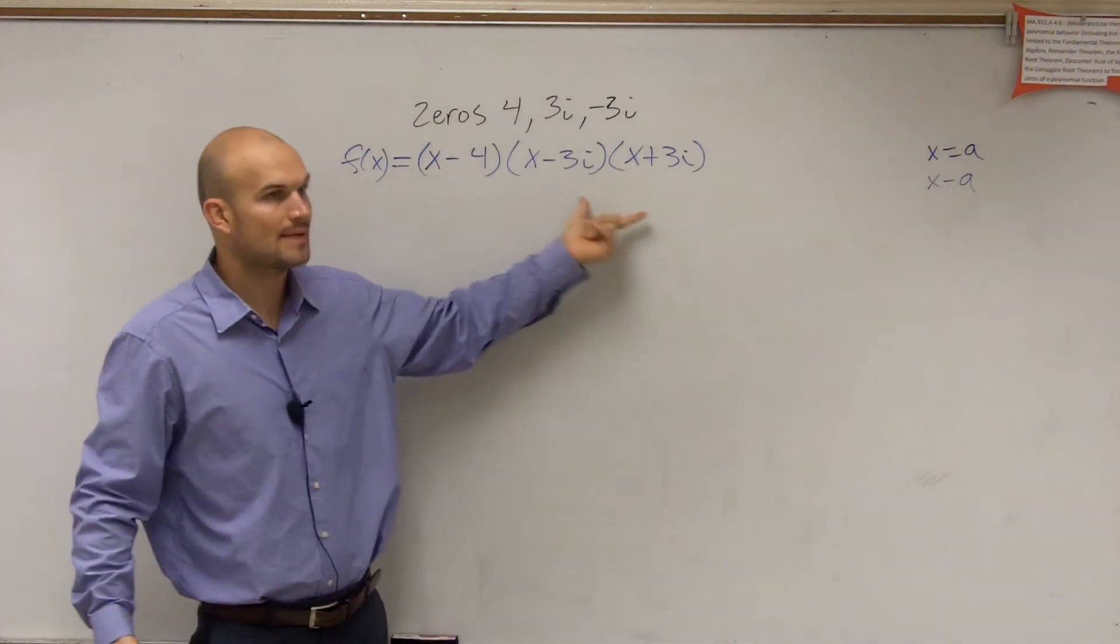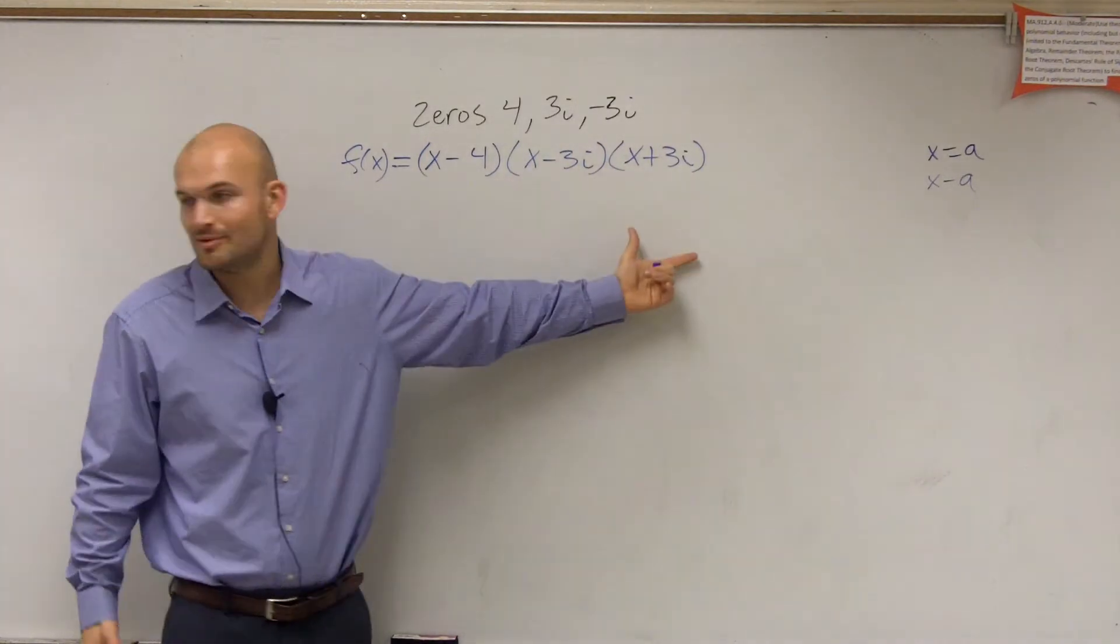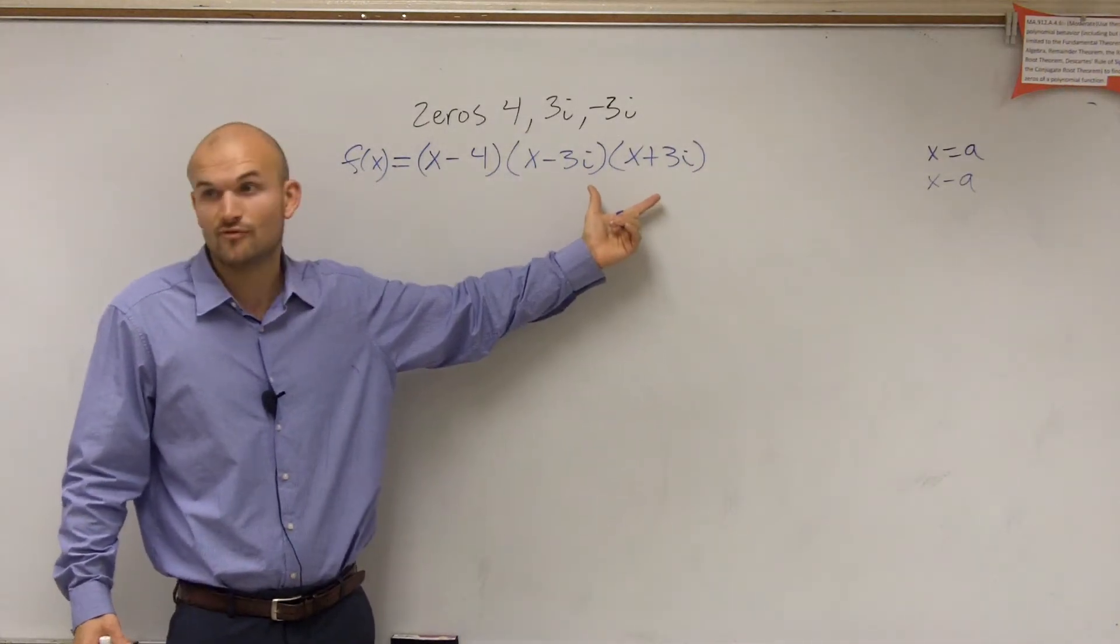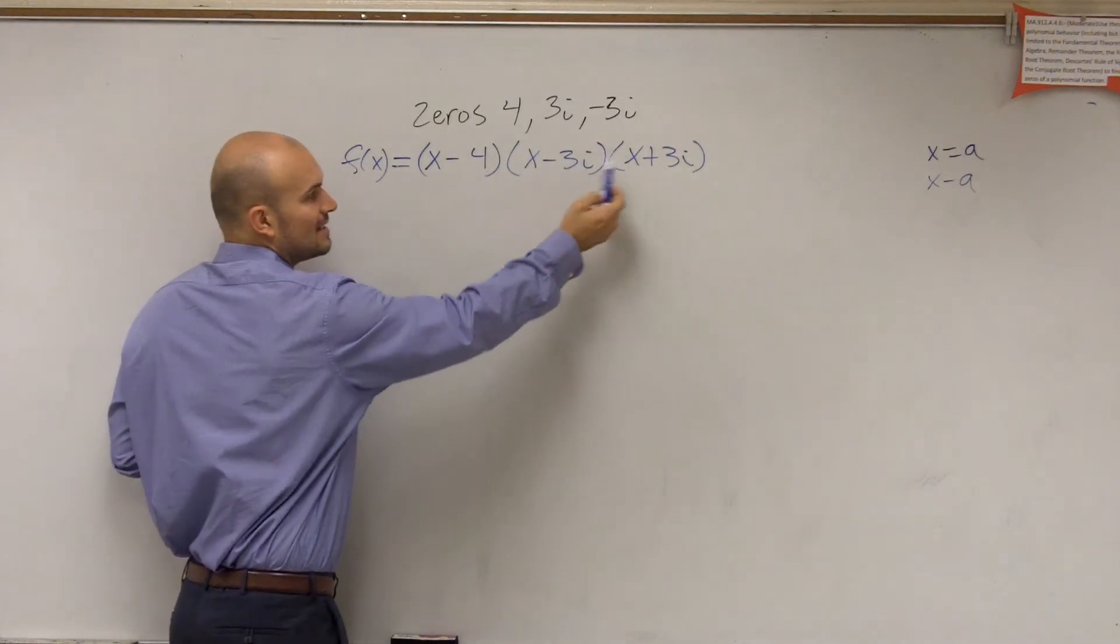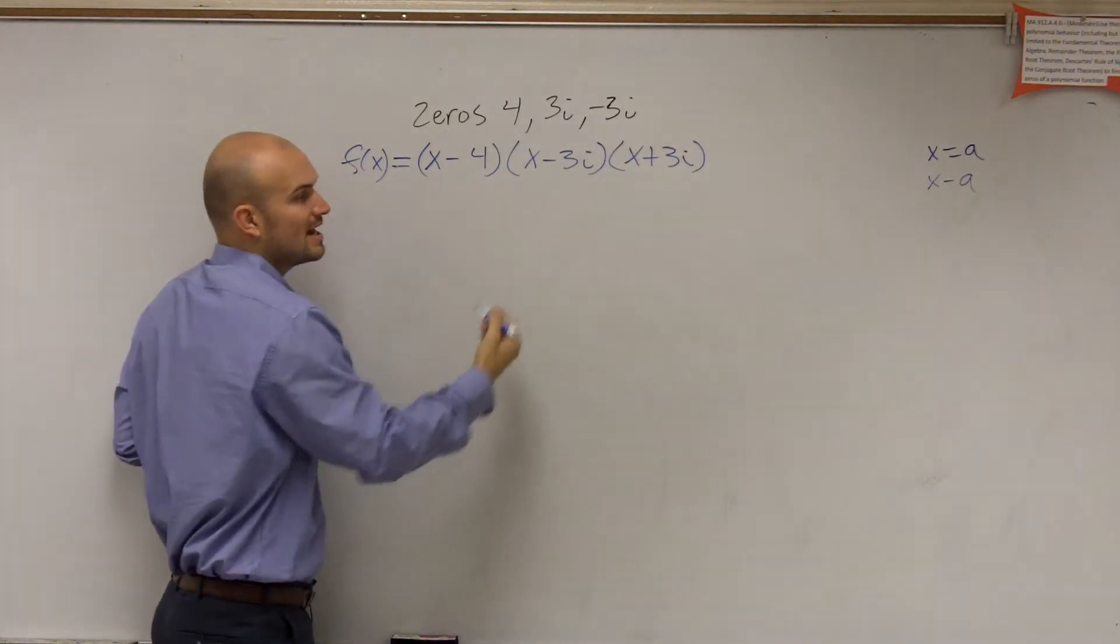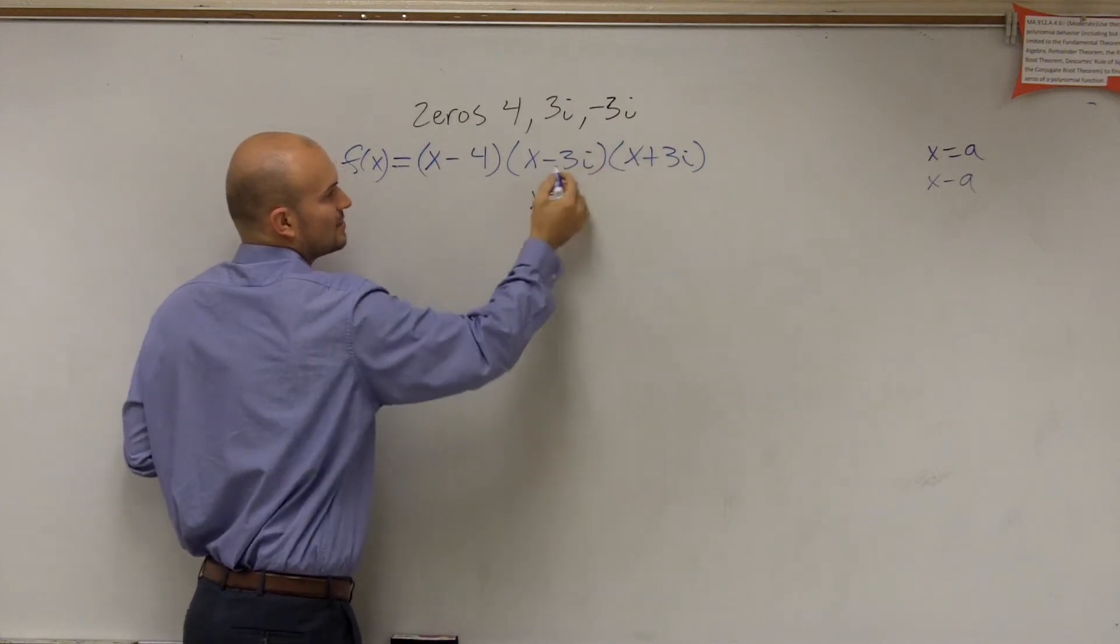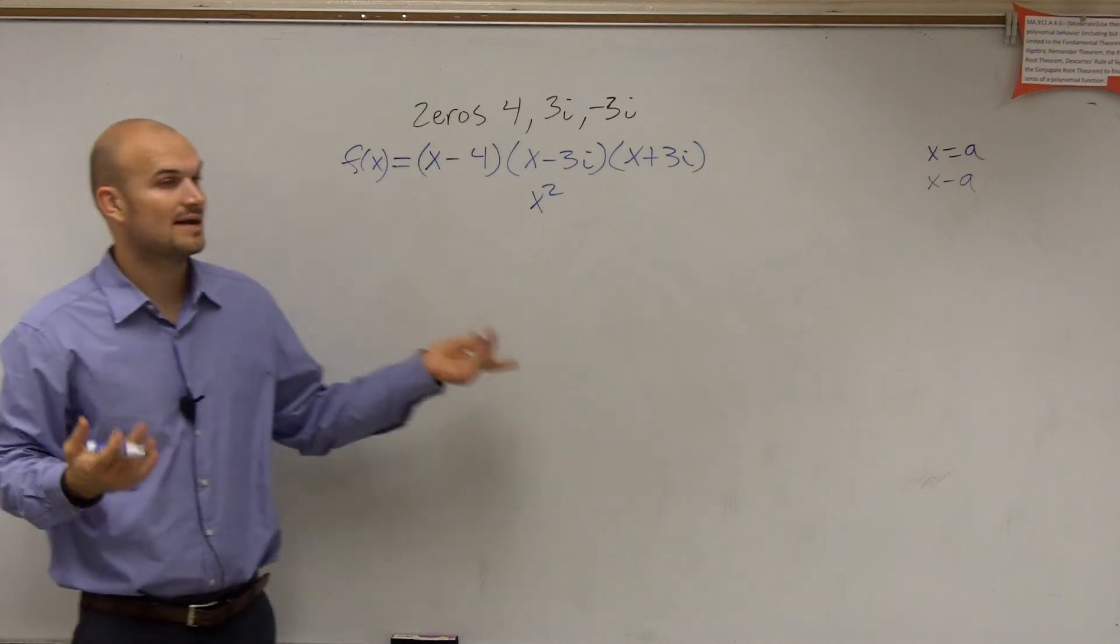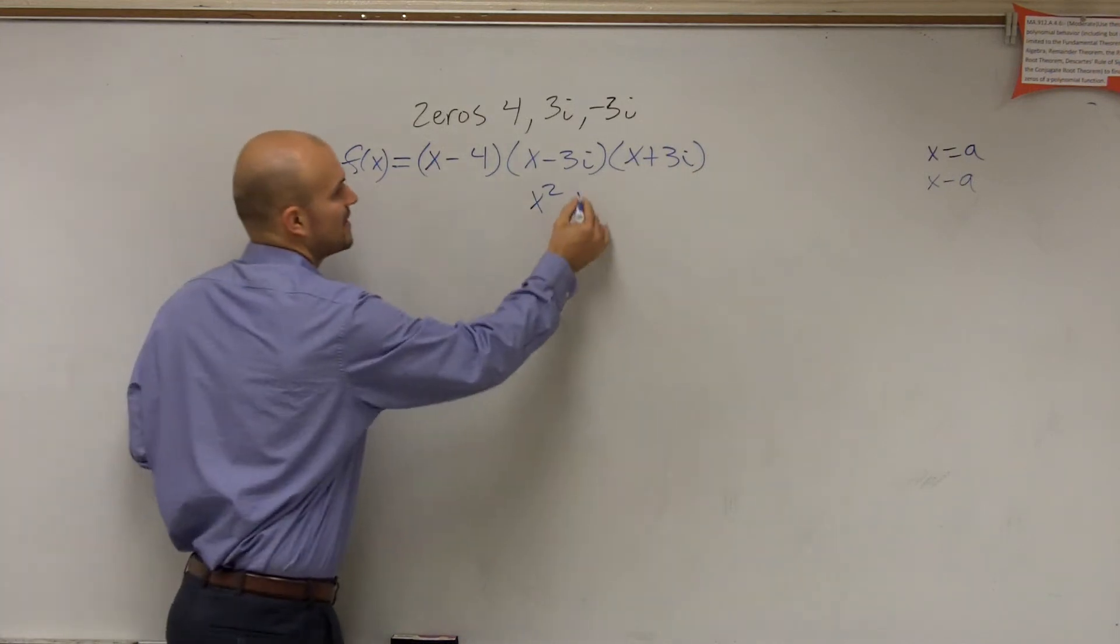What I'm going to do is I'm going to multiply these first. Why do I want to multiply these first? Because I always want to multiply difference of two squares first whenever I can because it's very simple. First two terms are the same, last two terms are the same, alternating a sign. All I need to do is just multiply x squared and the last two terms, which would be negative 3 times 3 would be negative 9 times i squared, which would be negative 1. Negative 1 times negative 9 would be positive 9.